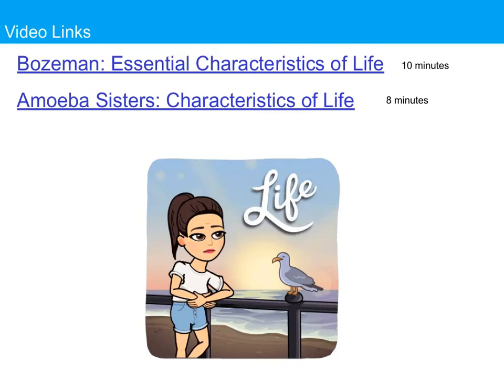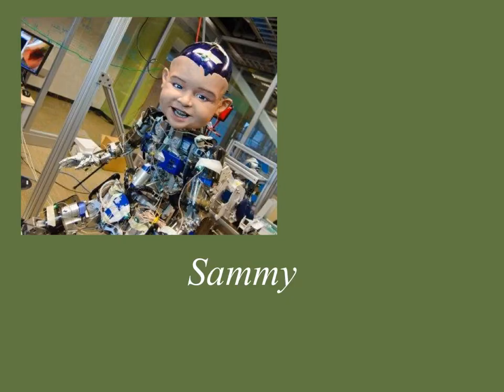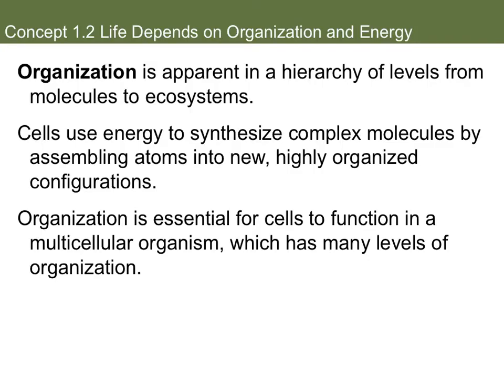In this class we'll watch a lot of Bozeman — he teaches AP biology in Washington State — and there's also the cartoon version of these concepts, the Amoeba Sisters. There's a 10-minute video or an 8-minute video; please watch one of them. One thing we talked about in properties of life is that all living things have cells, and it kind of goes with the idea that all life is organized. Organization in life is apparent when you look at the hierarchy of levels, going from small to large — from the atom all the way to the biosphere. That's called organization.